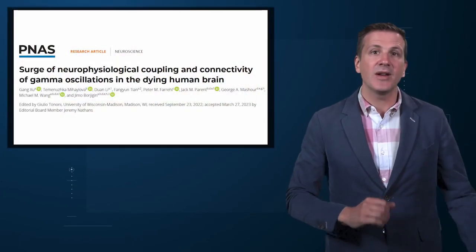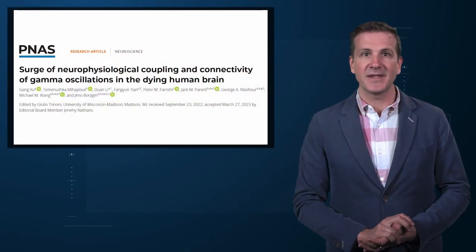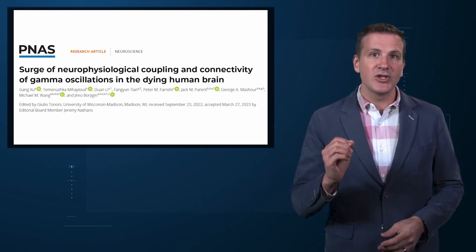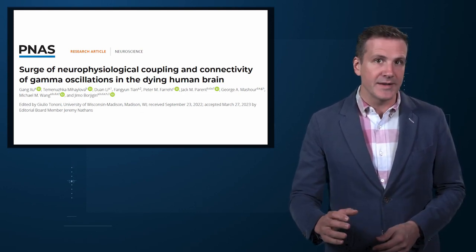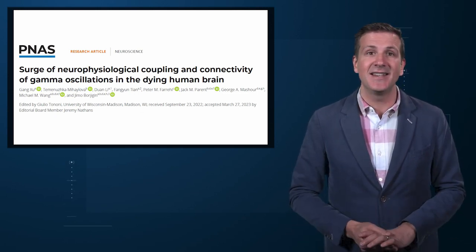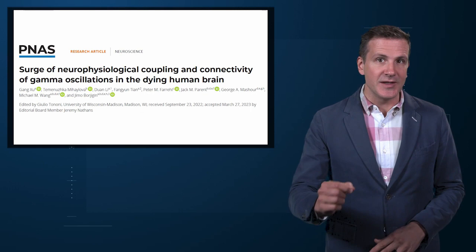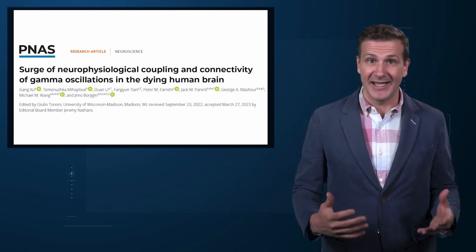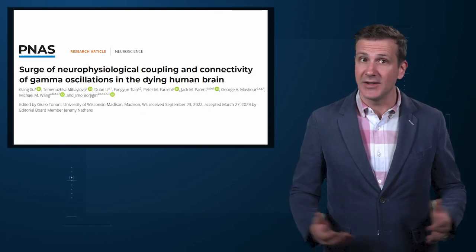We're talking about this study appearing in the Proceedings of the National Academy of Sciences by G. Moe Borjgan and her team. Dr. Borjgan studies the neural correlates of consciousness, perhaps one of the biggest questions in all of science today. To wit, if consciousness is derived from processes in the brain, what set of processes are minimally necessary for consciousness?